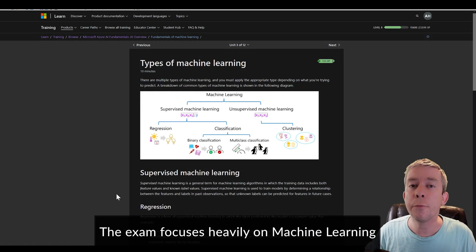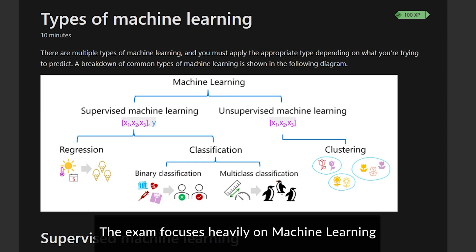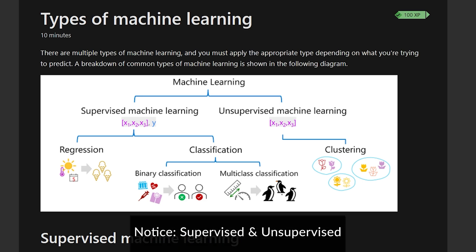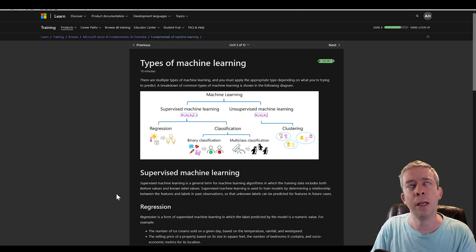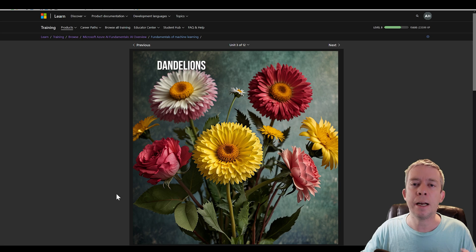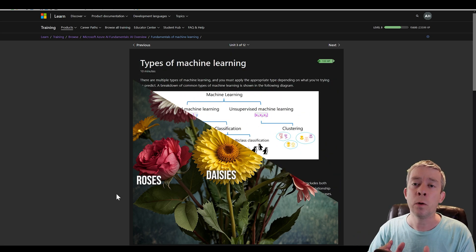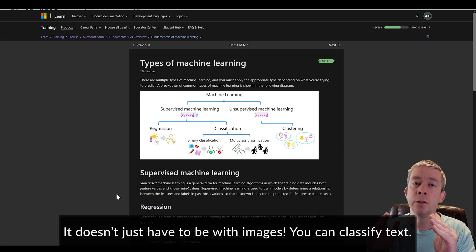You need to understand the different types of machine learning. You have regression, classification, and clustering. Classification is split into two types: binary and multi-class. Binary is true or false — yes or no. Multi-class gives you a set of choices to classify things as. Think of flowers: dandelions, daisies, and roses. You classify the machine to place those flowers into one of those exact classes.